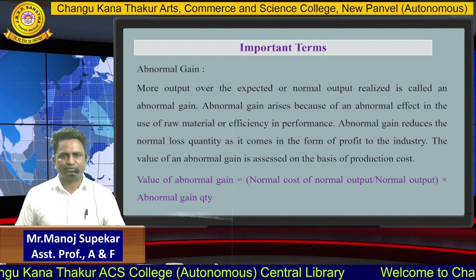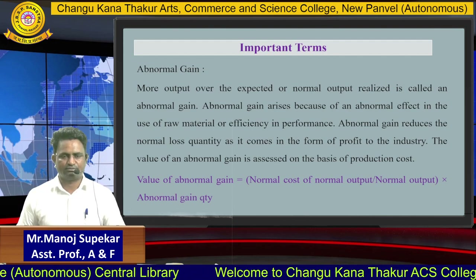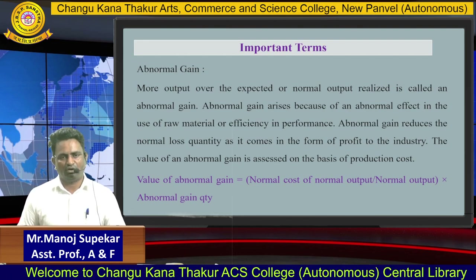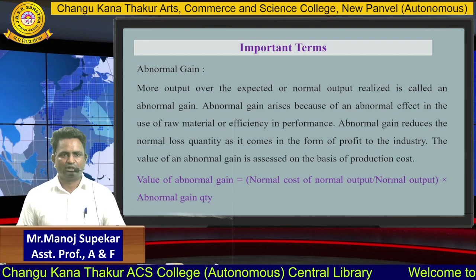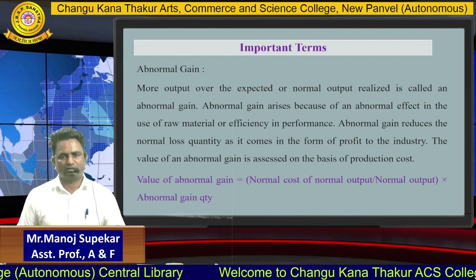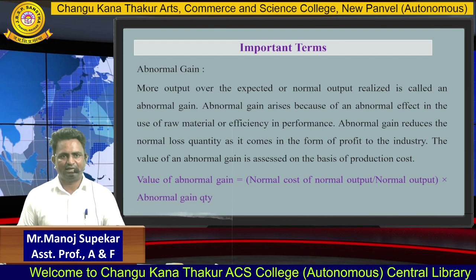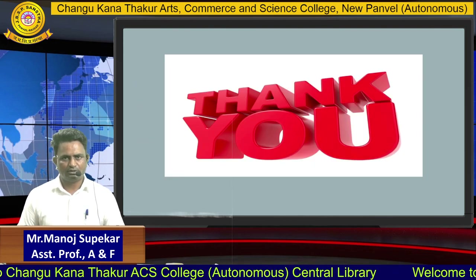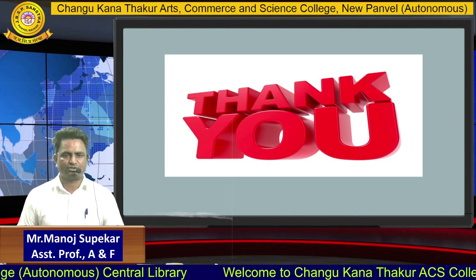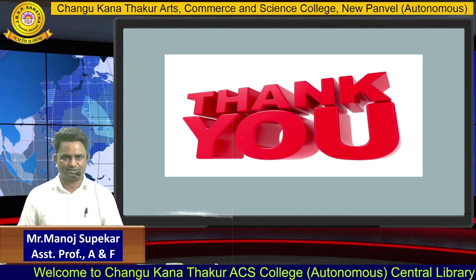In the entire process of process costing, we first understood what process costing is, what its features are, and what its advantages are. We also understood the basic concepts of normal loss, abnormal loss, and abnormal gain. This costing method is very important for manufacturing organizations that continuously manufacture homogeneous goods, such as oil refineries, paper mills, textiles, and homogeneous product manufacturers. In today's session, we covered the basic part of process costing. I hope you understand. Thank you so much.